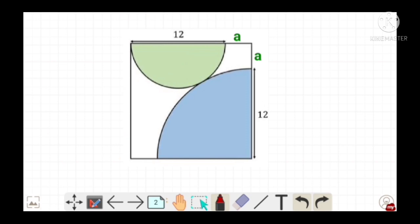So for this let us consider a length a in such a way that a plus 12 becomes the length of the provided square.